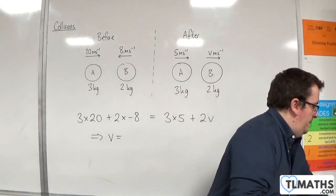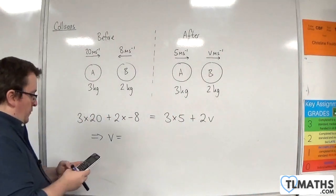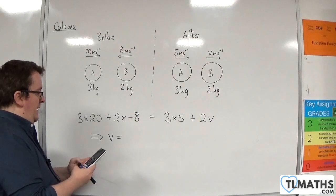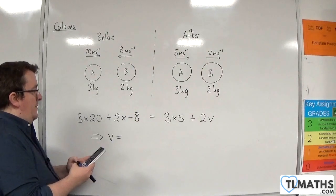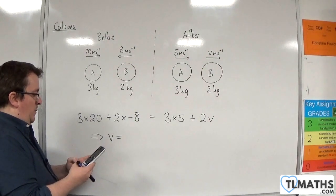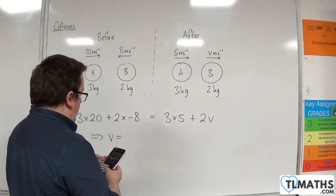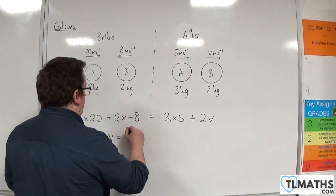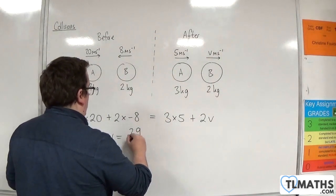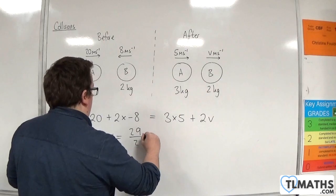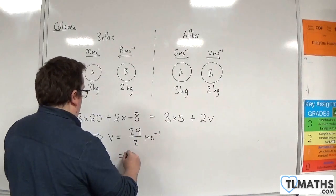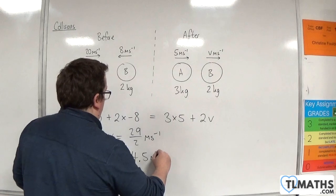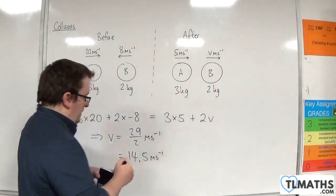So we take 3 times 20 plus 2 times minus 8, then subtract 3 times 5, and divide by 2. We get 29 over 2 metres per second, which is 14.5 metres per second.